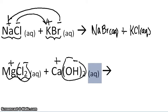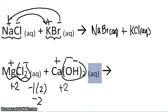Magnesium has a plus two charge, because chlorine has a minus one charge and we have two of them, which equals minus two — so the charge is balanced. Calcium must have a plus two charge, and hydroxide must have a minus one charge. There are two of them, giving minus two, so both of these compounds have a neutral charge.